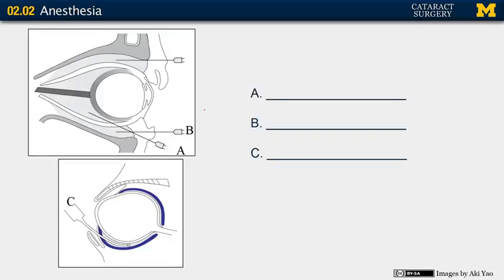These pictures illustrate, based on the needle or the cannula, where the anesthetics are placed. Needle A demonstrates that the anesthetic is placed in the intraconal space — this is a retrobulbar block. Needle B demonstrates placement in the extraconal space — this is a peribulbar block. And cannula C shows placement in the anterior intraconal space — this is a subtenons block, placed underneath conjunctiva and Tenon's capsule.